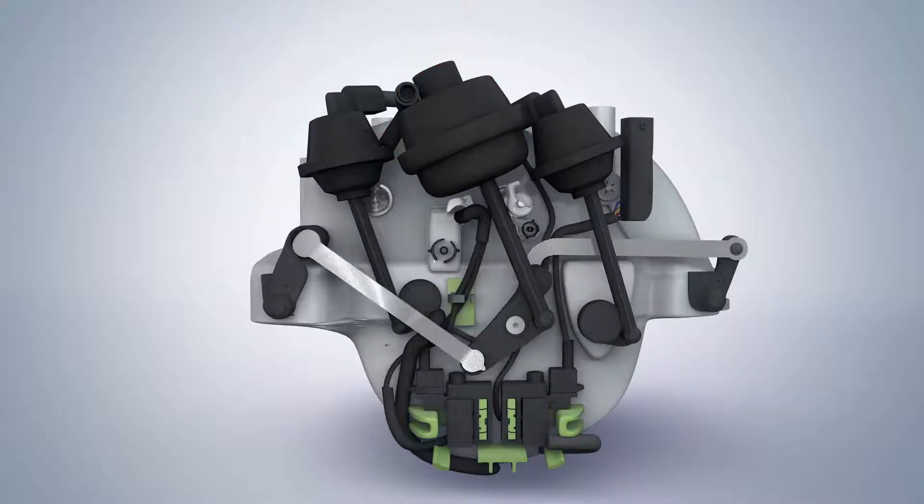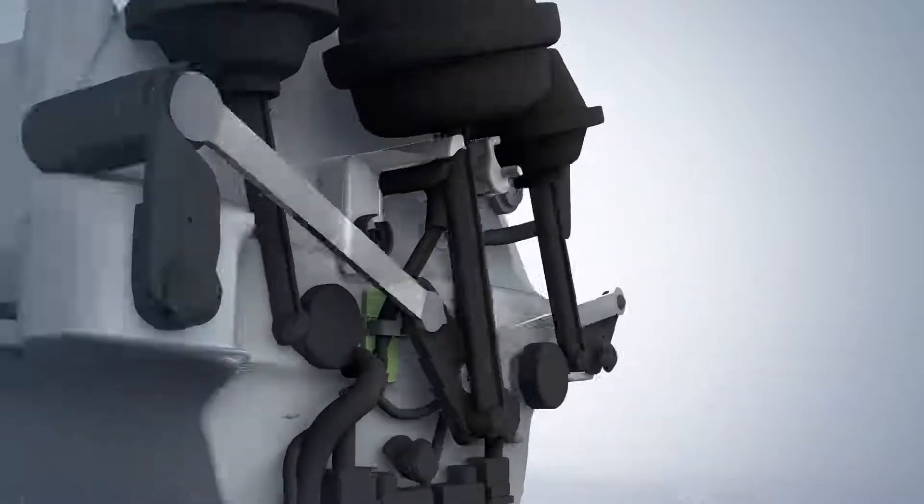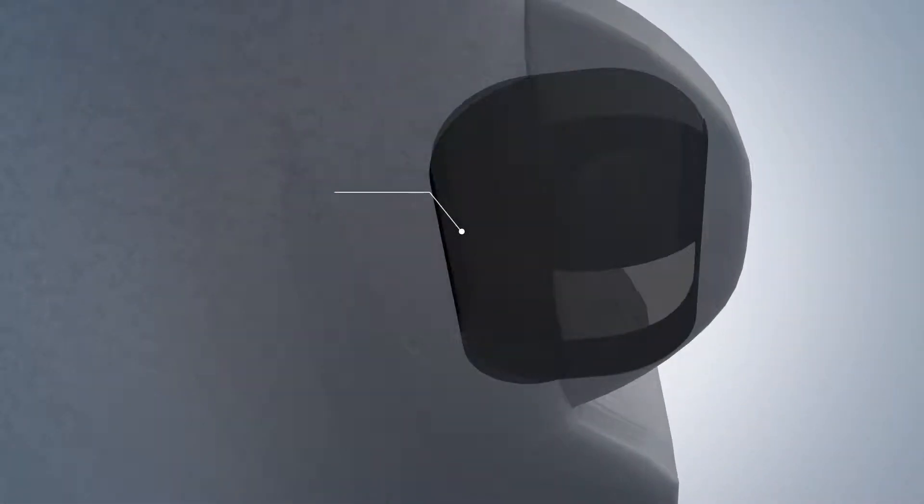The central pivot lever is operated by a computer-controlled vacuum actuator, which in turn operates the swirl flaps. As the intake manifold experiences carbon buildup, the flaps have to work harder and harder to open and close.